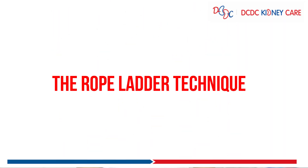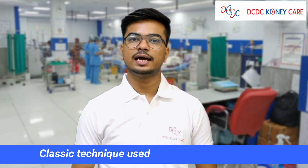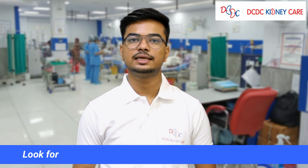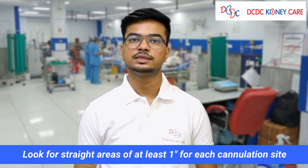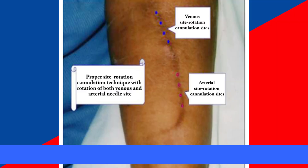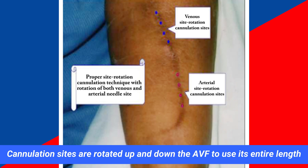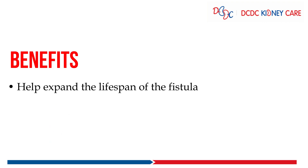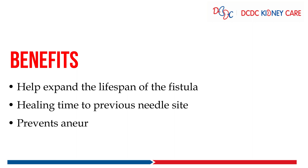The rope ladder technique is the classical technique used in dialysis centers, utilizing the entire fistula length. Cannulation is done at a distance of one inch from the previous cannulation site, following a straight path. When the entire length of the AV fistula is used, the previous cannulation sites are repeated. Benefits include: it expands the lifespan of the AV fistula, gives time to heal previous cannulation sites, and prevents aneurysm.